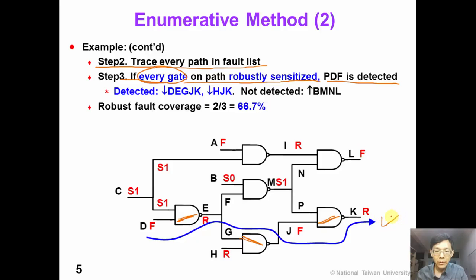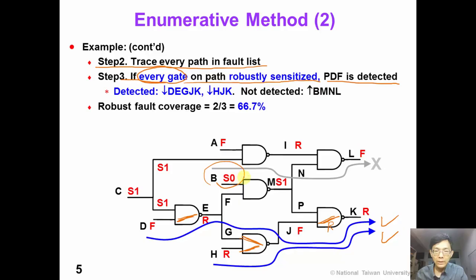So this path-delay fault D-E-G-J-K is robustly detected. Let's consider the second path in the fault list, H-J-K. This gate is robustly sensitized and this is also robustly sensitized. So the H-J-K path-delay fault is also robustly detected. Now consider the third fault, B-M-N-L. This path-delay fault is not robustly sensitized, so it's not detected. Now we have detected two out of three path-delay faults in the fault list. So the robust fault coverage is 2/3, approximately 66.7 percent.